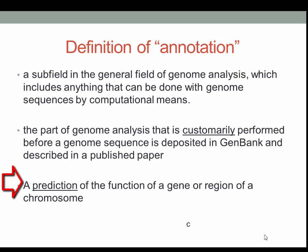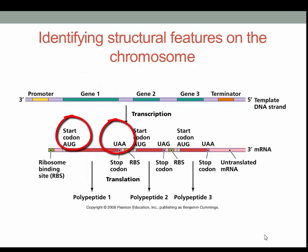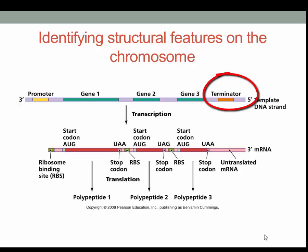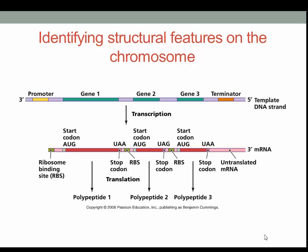Another definition of an annotation is a prediction of the function of a gene or region of a chromosome using computational means. Gene annotation uses bioinformatics tools to analyze sequence information and make predictions about structural elements and the function of DNA regions based on similarities to known sequences. A genome annotation can be used to predict the function of an open reading frame, where a gene starts and ends, regulatory elements controlling gene expression, and the cellular location of the translated protein, including whether a protein is modified post-translationally.